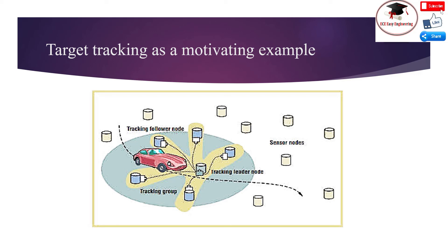The figure illustrates that at any time instant T, IDSQ — Information-Driven Sensor Querying — designates a single node located close to the target as leader. The leader node fuses these high signal-to-noise ratio measurements and updates its current target location estimate, referred to as belief. For most sensor types, owing to the physical properties of signal propagation, sensors with high signal-to-noise ratio will be within a limited range of the leader node.